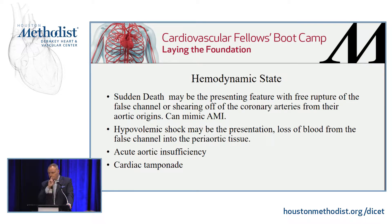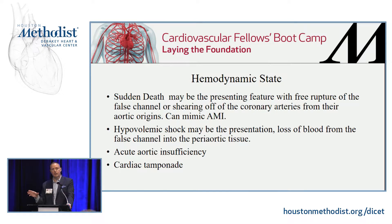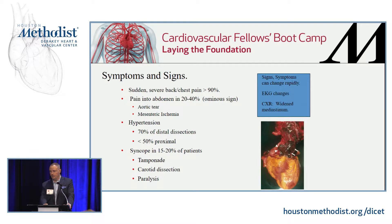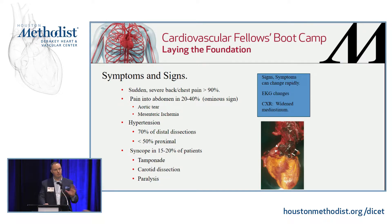Sudden death can be the presenting feature in either type A or type B if they rupture. For type A, they can shear off the coronaries — looking like an acute MI — have severe aortic insufficiency, or develop tamponade from effusion. If a type A patient comes in with significant pericardial tamponade, you open the chest, suck out the fluid — they're not actually freely ruptured — and their hemodynamics improve significantly. Abdominal pain in a dissection patient is an ominous sign; you're worried about mesenteric ischemia, and those patients tend not to do well.